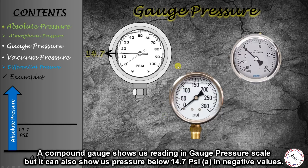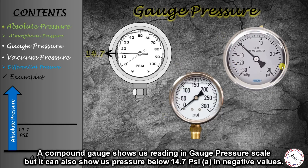There is another type of gauge called a compound gauge. That gauge measures gauge pressure but can show readings both above and below atmospheric pressure. If pressure is below atmospheric pressure, the compound gauge will show negative values. It still uses the gauge pressure measurement scale.